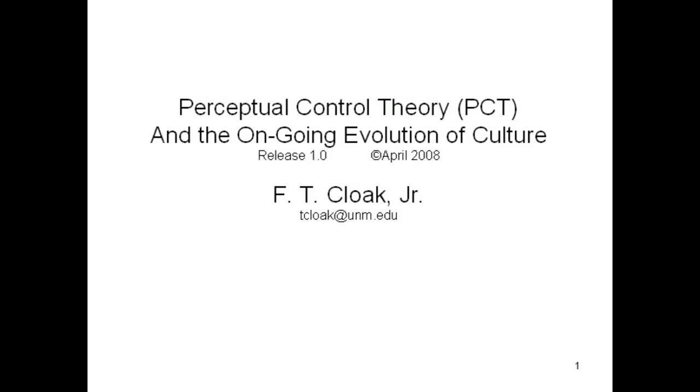Perpetual control theory and the evolution of culture. Darwin showed that living things evolved by natural selection of biological features. In other words, he showed how evolution works, but he could not show how natural selection works because he didn't know about genetics.